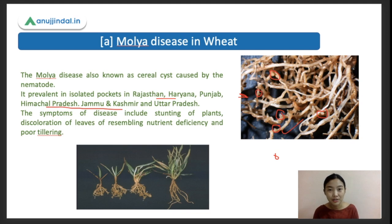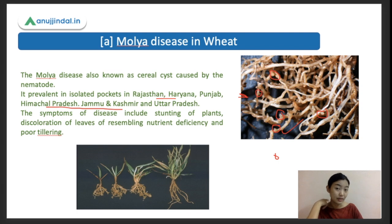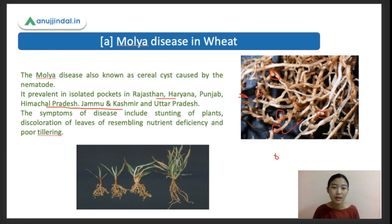In simpler terms, just as we have cyst or tumor-like structures in humans, plants also have cyst or tumor-like structures. A tumor would be more comparable to root-knot balls, caused by root-knot nematode Meloidogyne. But this nematode causes a cyst in the roots of these plants, especially in wheat and barley. The symptoms include stunting of the plants - abnormal, retarded growth.